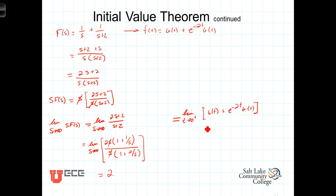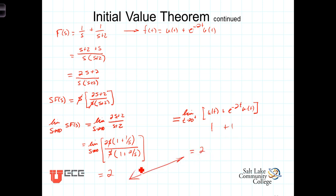On the time domain side, taking the limit as t approaches 0 plus: the unit step function u(t) equals 1 at 0 plus (it would equal 0 at 0 minus). And e^(−2·0) = e^0 = 1, with u(t) again equal to 1 at 0 plus. So the time domain limit equals 1 + 1 = 2. As hoped, the limit of s·F(s) as s approaches infinity equals the limit of f(t) as t approaches 0 plus — both equal 2, verifying the initial value theorem.